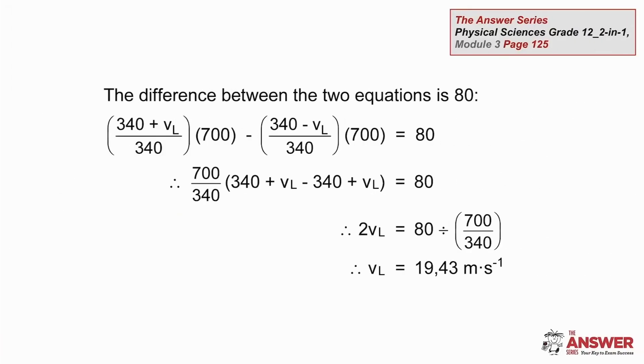Fortunately, we have one more equation. The difference between the two frequencies heard. So the toward frequency, subtract the away frequency, is 80. Solve carefully, and you should get a speed for the car of 19.43 meters per second. That last digit is rounded off to two decimal places.